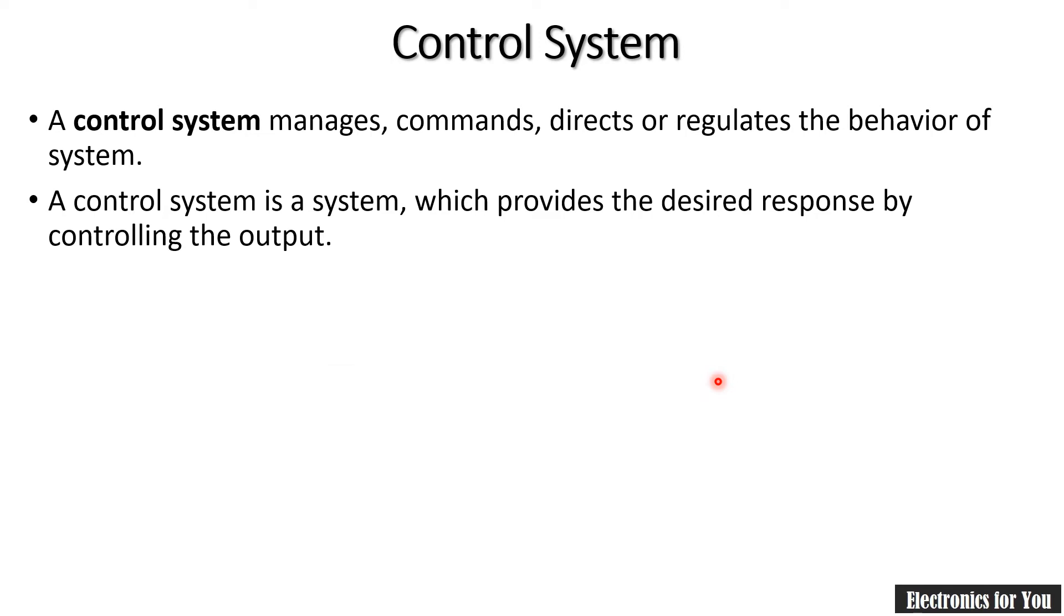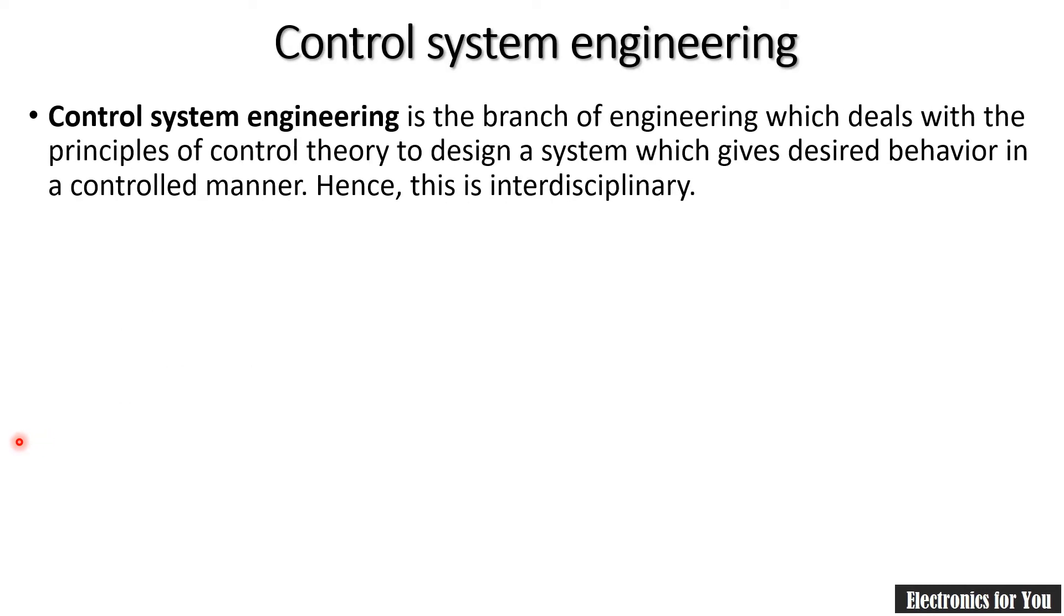The examples of control system are fan with regulator, classroom with professor, then traffic light, electric iron, etc. There are many examples that you can write in the examination.